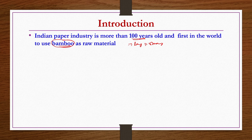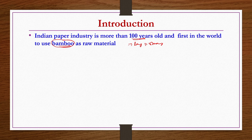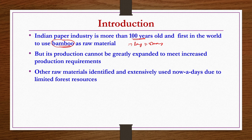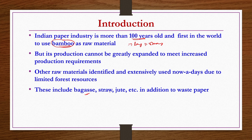However, demand for paper is so much higher that having sufficient bamboo plants is not possible. Cultivation of bamboo has not been taken to that level, so its production cannot be greatly expanded to meet increased production requirements. Other raw materials identified and extensively used nowadays due to limited forest resources include bagasse from the sugar industry, straws like rice straw and wheat straw, jutes, and in addition to waste paper.